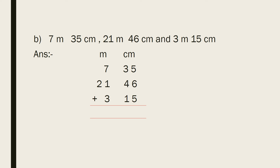Now, add these 3 lengths. First, we add 5, 6, and 5. 5 plus 6 is 11, and 11 plus 5 is 16. Write 6 here and 1 carry over. Now, we add 3, 4, 1, and the carry. 4 plus 3 is 7, plus 1 is 8, plus 1 is 9. Write 9 here. Now, we add 7, 1, and 3. 7 plus 1 is 8, and 8 plus 3 is 11. Write 1 here and 1 carry over. Now, we add 2 and the carry. 2 plus 1 is 3. So, the answer is 31 meters 96 centimeters.